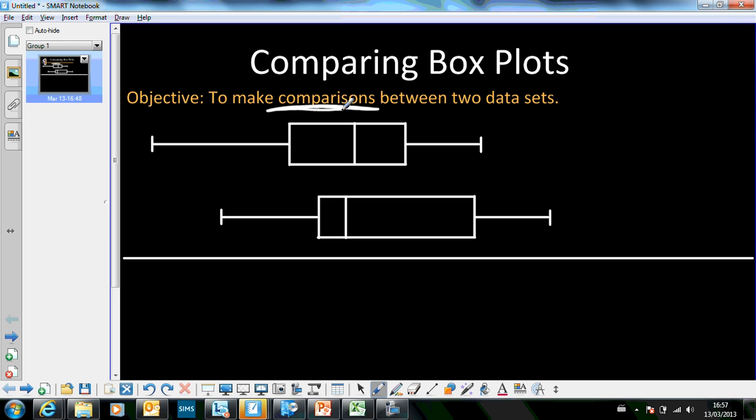So for example, here I've got two box plots, and you'll notice I haven't put any numbers on my axis here. Obviously you would do that if you were drawing a box plot, but I want to just emphasize that really it's the shape of the box and the whiskers, in particular the box, that tells us the differences.